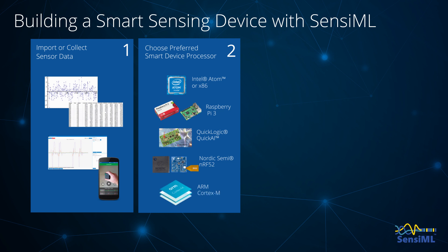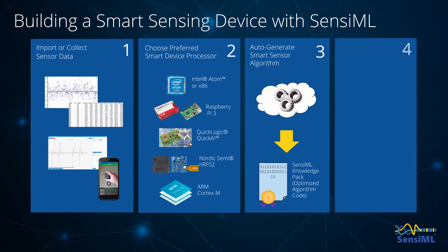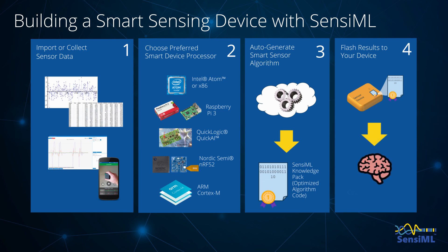Step three involves Analytics Studio, which is a server-based application that uses highly parallelized code to search through the optimal set of feature extractors, target segmenters, and classifiers to give you the idealized outcome based on the labeled data you provided in step one. The output of step three is either a library file or a compiled binary that can be directly flashed to your device. In either case, the resulting code is compiled either with your own additional code or directly created from the compiled binary and flashed to your device. Once completed, you now have a standalone smart sensing device that can autonomously inference or classify results from physical sensor signals in real time, without any further need of the tool or the cloud.